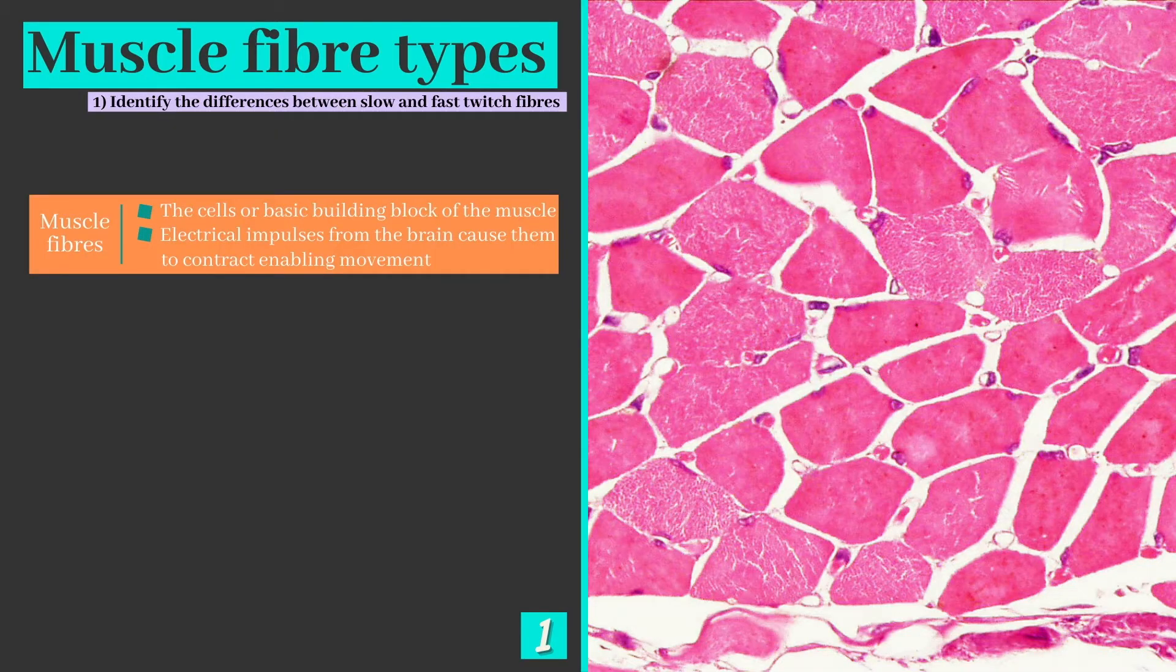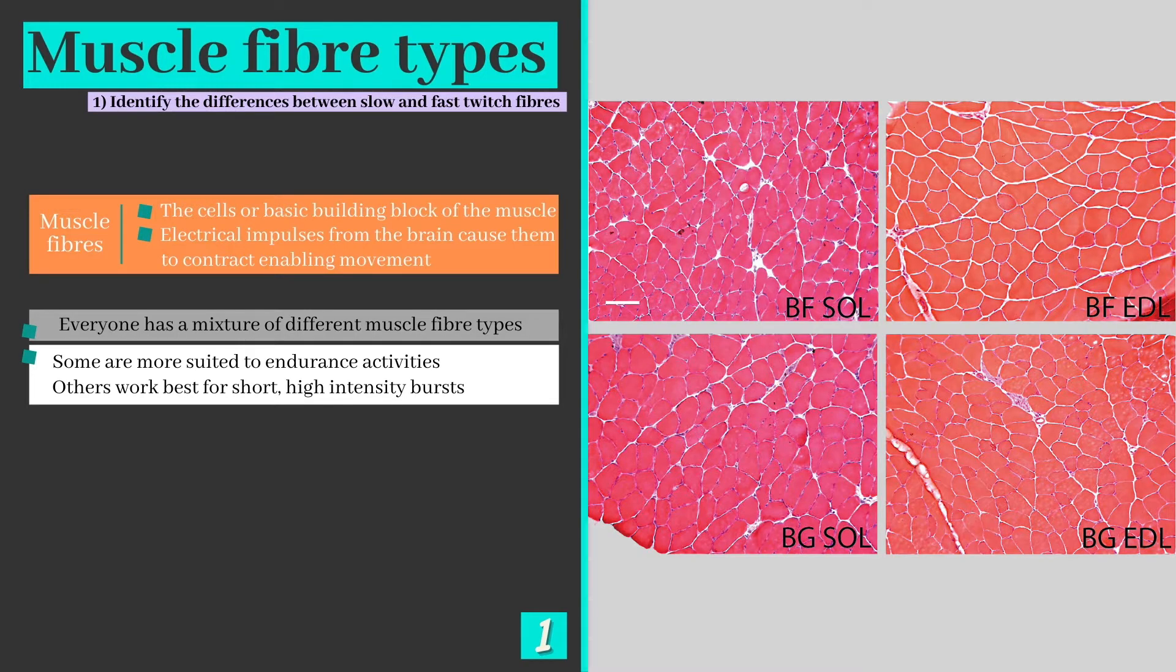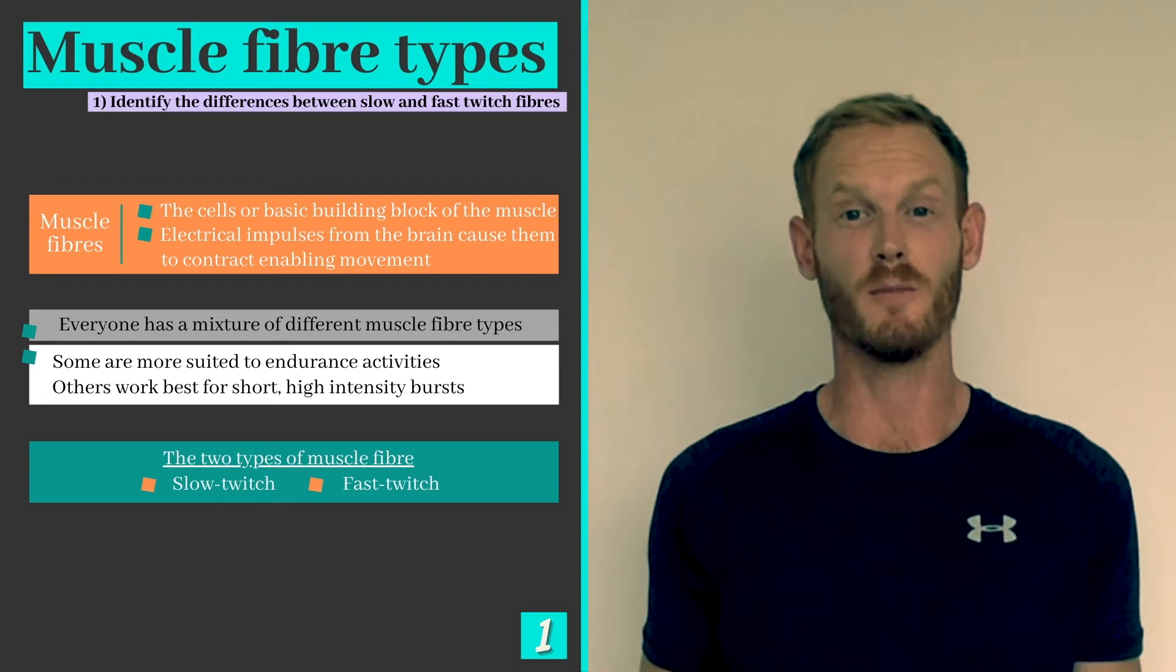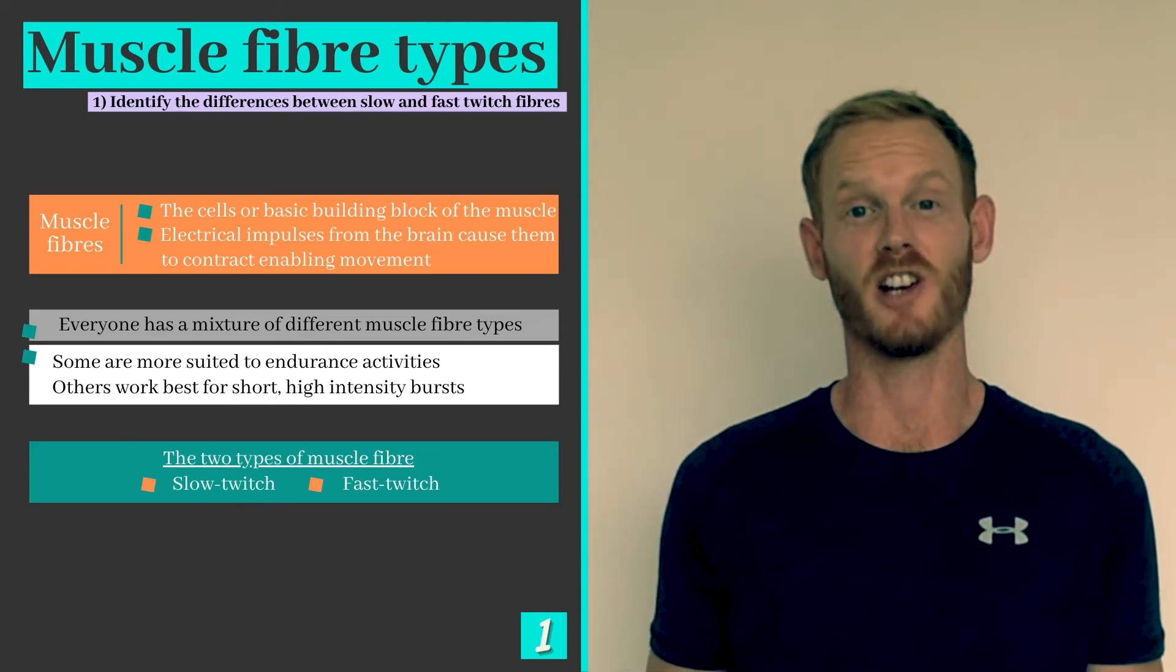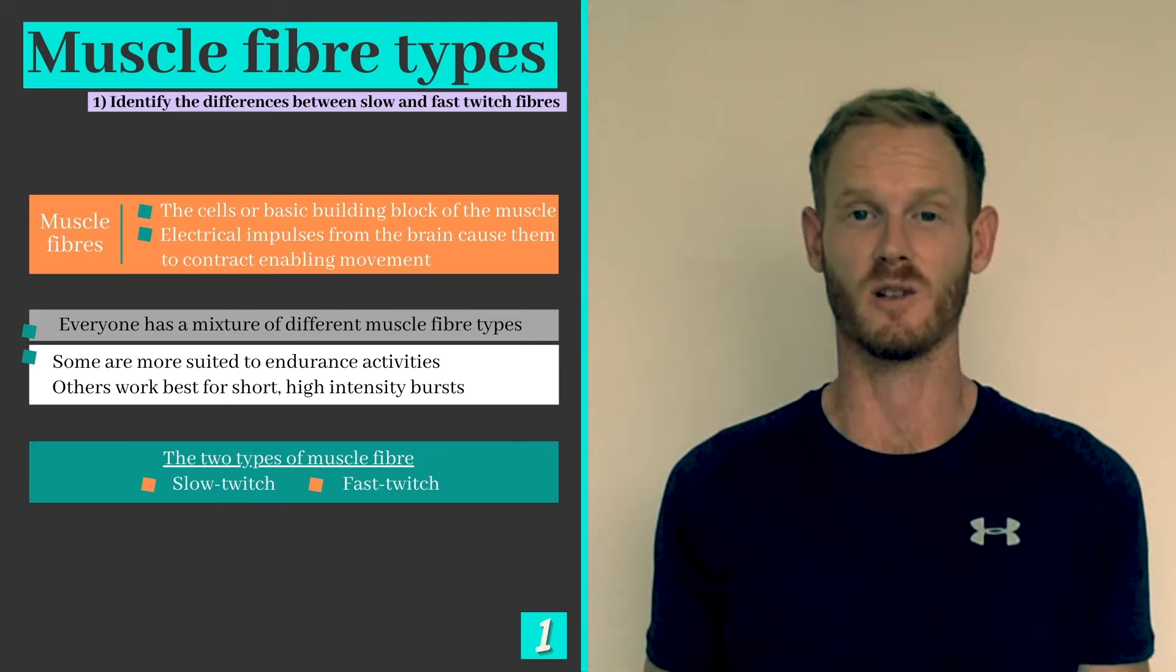Muscle fibers are the cells or basic building block of the muscle. Electrical impulses from the brain cause them to contract, enabling movement. Everyone has a mixture of different muscle fiber types, some of which are more suited to endurance activities while others work best for short high intensity bursts. The two types of muscle fibers we're going to learn about today are known as slow twitch and fast twitch.